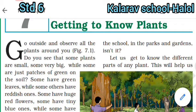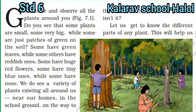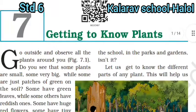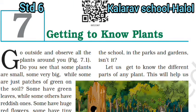Go outside and observe all the plants around you. Do you see that some plants are small, some very big, while some are just patches of green on the soil? Some have green leaves, while some others have reddish ones. Some have red flowers, some have tiny blue ones, while some have none. We see a variety of plants existing all around us — near our homes, in the school ground, on the way to school, in the park and gardens.